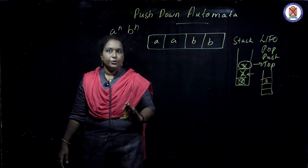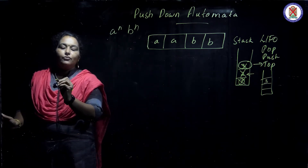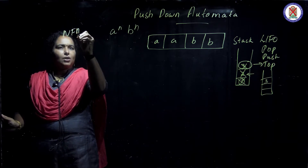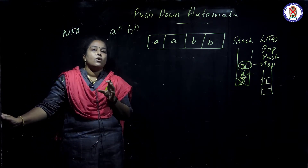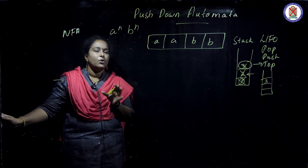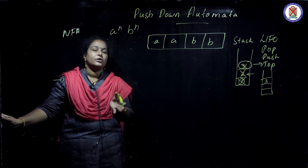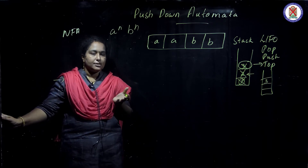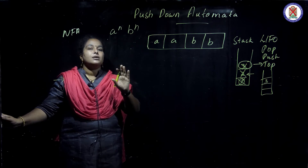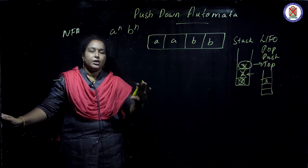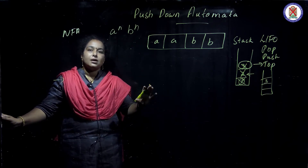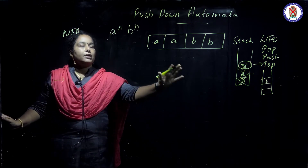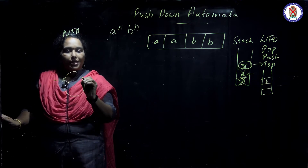In Push Down Automata, we can use NFA logic — considering only accepting conditions. Non-accepting conditions are not considered; if they occur, the automata gets stuck there. We are only bothered with accepting conditions, which move to the last state.